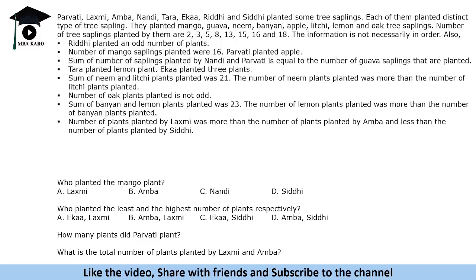Whenever we solve such questions, we have to make a matrix in table form. The first thing most of us do is start with names — Parvati, Lakshmi, Amba — and then write the type of plant and number of trees. But remember, this approach should not be followed when numbers are involved and you have certain mathematical operations on those numbers.